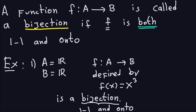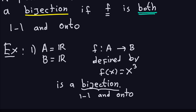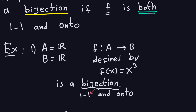Let's look at some examples. The function f(x) = x³ that we talked about earlier — we saw it's onto, and you can also check that it's one-to-one. Draw a picture and convince yourself. Of course, convincing yourself and actually proving it are two different things, but you can see it from the graph of x³.